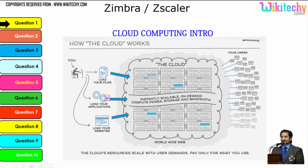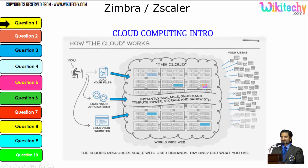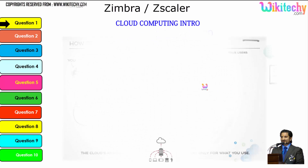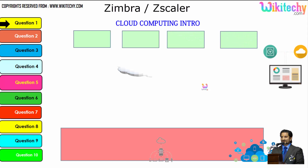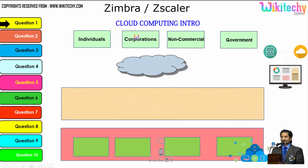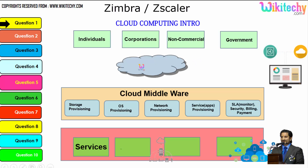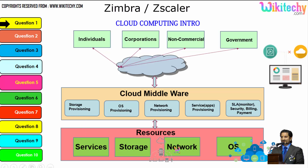Cloud computing is like renting servers or services and utilizing them. You can load files, applications, or your website so that any user can access it, and tracking or monitoring becomes really easy. There are different types of users: individuals, corporations, non-commercial people, and government. From any of these users, they are able to access software, services, storage, network, or operating systems via the cloud middleware.